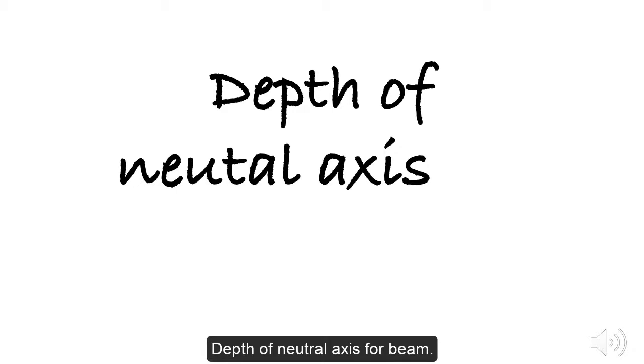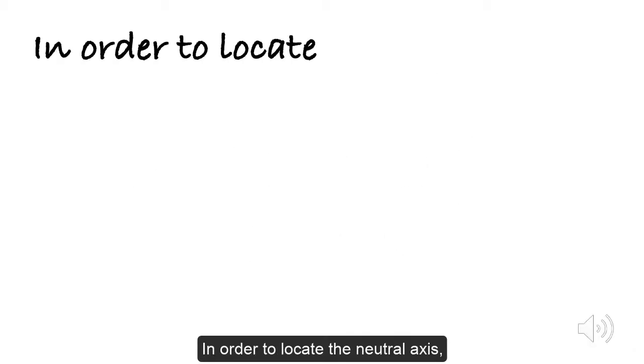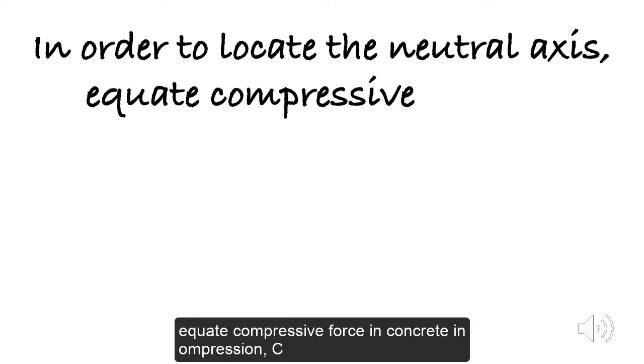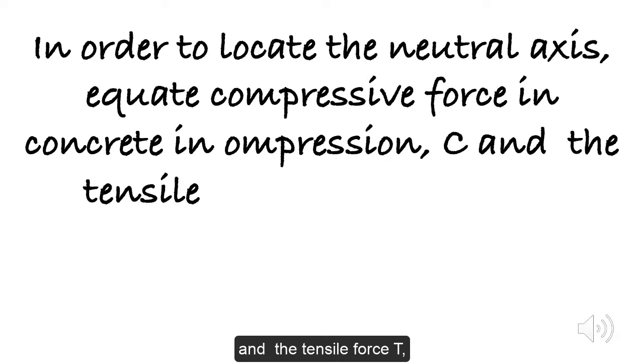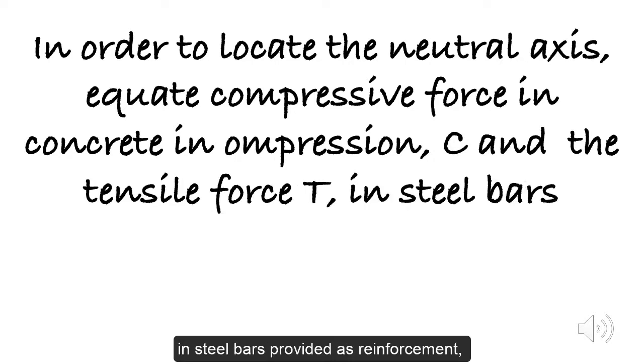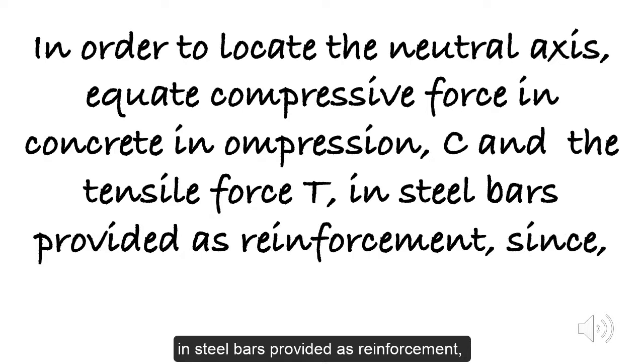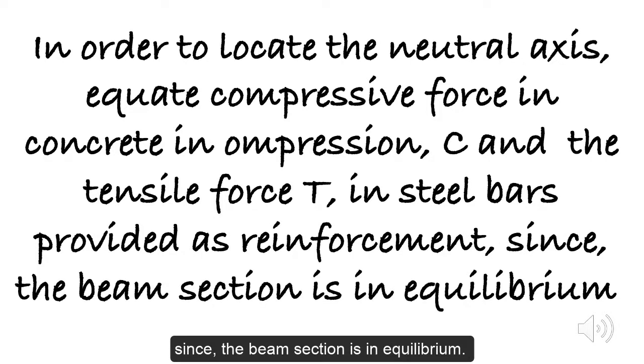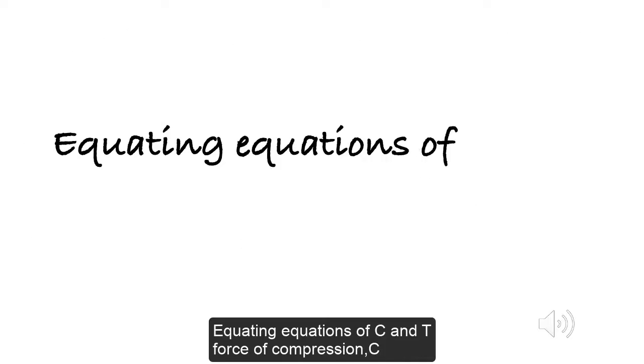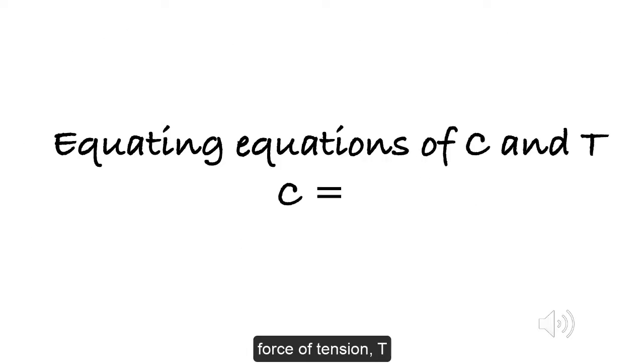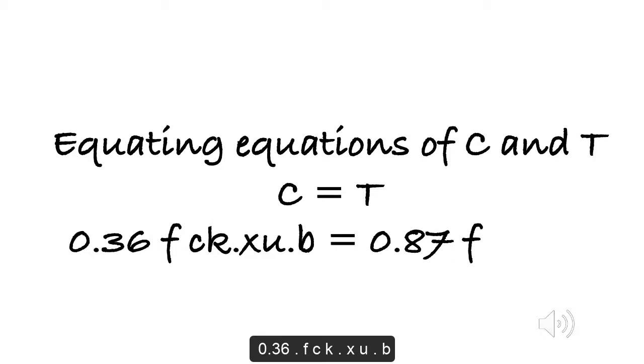Depth of neutral axis for beam. In order to locate the neutral axis, equate compressive force in concrete in compression C and the tensile force T in steel bars provided as reinforcement. Since the beam section is in equilibrium, equating equations of C and T, force of compression C equals force of tension T. 0.36 FCK XU B equals 0.87 FY AST.